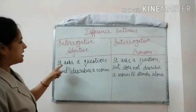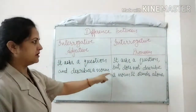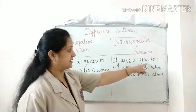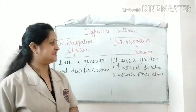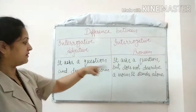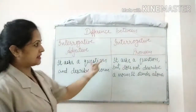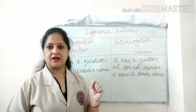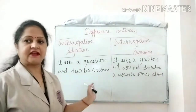Let's check the difference between interrogative adjective and interrogative pronoun. An interrogative adjective asks a question and describes a noun. Whereas, an interrogative pronoun asks a question but does not describe a noun — it stands alone. This is the difference: interrogative adjective describes a noun, whereas interrogative pronoun stands alone and does not describe a noun.